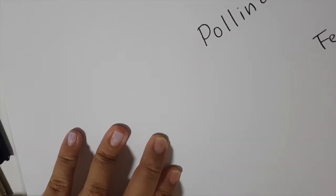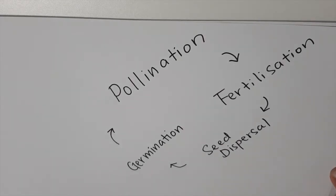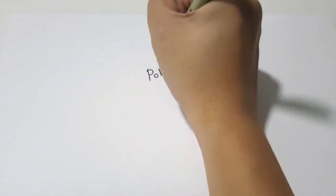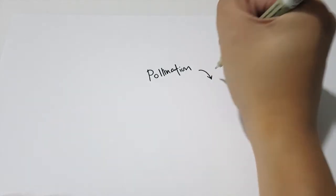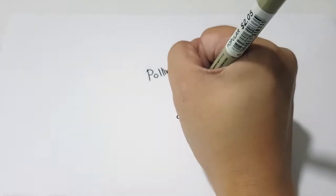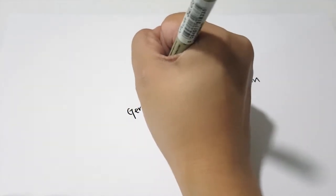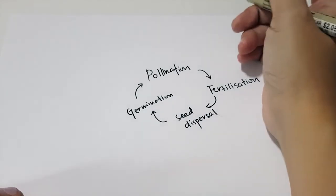In this video we are going to look at reproduction in plants and reproduction in humans. Let's start with the four processes that we learned in reproduction in plants: pollination, fertilization, seed dispersal, and germination.